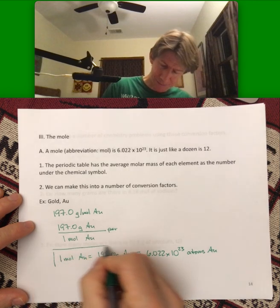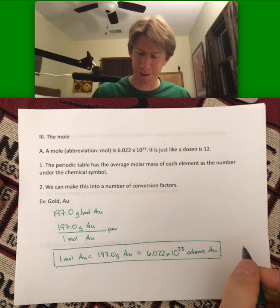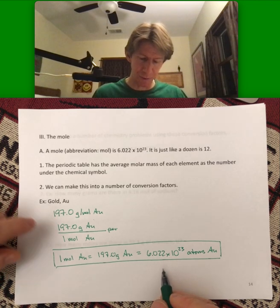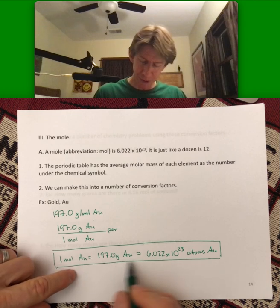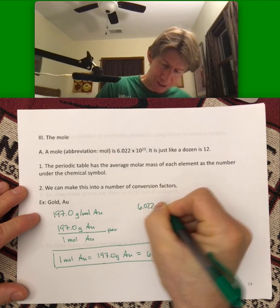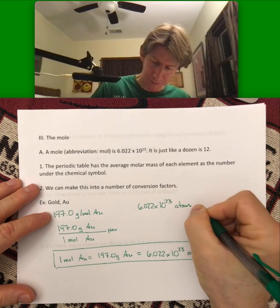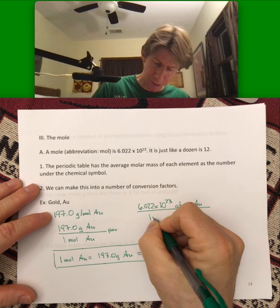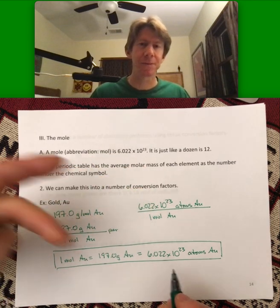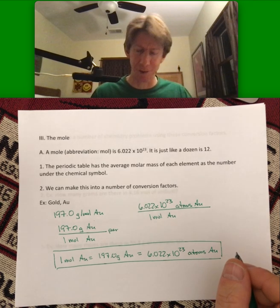So this is the heart of what so much of what we're going to be doing for the rest of the semester. And we can turn this into a number of unit conversion factors. We've already seen one, but we can put any combination of these. They're equal to each other. So you can put either one on the top and the other one on the bottom, whatever helps you to cancel your units.